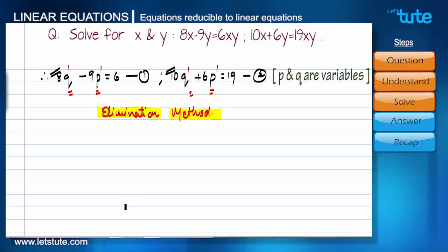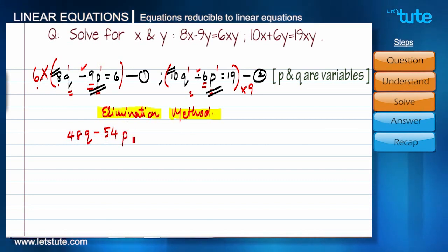If you remember, in elimination method we have learnt that first we need to decide which term we need to eliminate. Here I have decided to eliminate the term with the variable p, and since they have opposite signs, minus here and plus here, I need to add them. Before that I need to make the coefficients of p equal. For that reason I will multiply equation number 1 by 6 and equation number 2 by 9. This will give us 48q minus 54p equals 36.